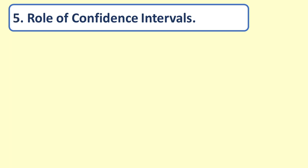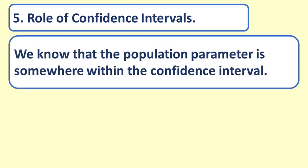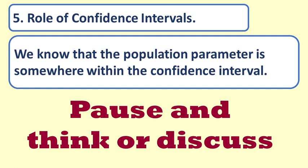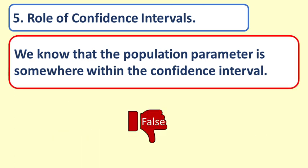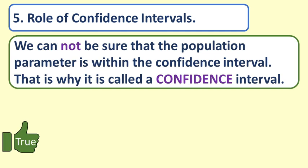Question 5: Role of confidence intervals. We know that the population parameter is somewhere within the confidence interval. Answer: False. We cannot be sure that the population parameter is within the confidence interval. That is why it is called a confidence interval and not a certainty interval.